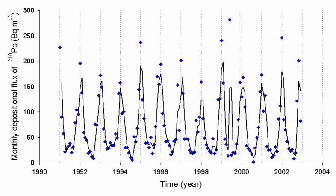Radon was the fifth radioactive element to be discovered, in 1899 by Ernest Rutherford and Robert B. Owens, after uranium, thorium, radium and polonium. In 1900, Friedrich Ernst Dorn reported some experiments in which he noticed that radium compounds emanate a radioactive gas he named radium emanation. Before that, in 1899, Pierre and Marie Curie observed that the gas emitted by radium remained radioactive for a month.